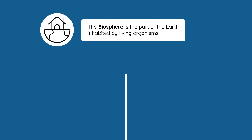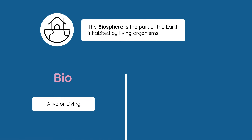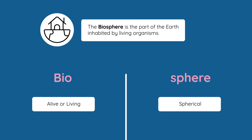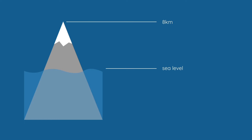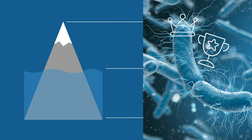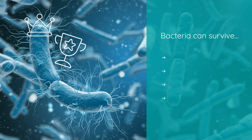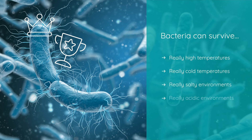The final definition in this video is the word biosphere. 'Bio' means alive or living, and 'sphere' refers to the Earth being a spherical shaped planet. The biosphere is the part of our planet inhabited by living organisms. This reaches from about 8km above sea level, to the top of Mount Everest, to 10km below sea level at the bottom of the Marianas Trench in the Pacific Ocean. It should be noted that the most successful organisms on our planet are actually bacteria, in the context that they can survive in the harshest and most extreme conditions, like really high temperatures, really cold temperatures, and really salty or acidic environments.